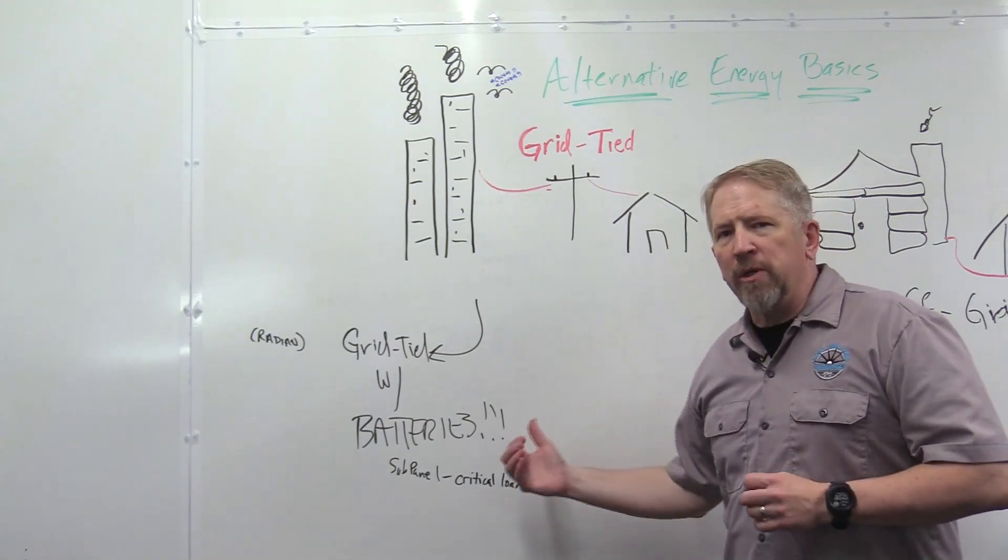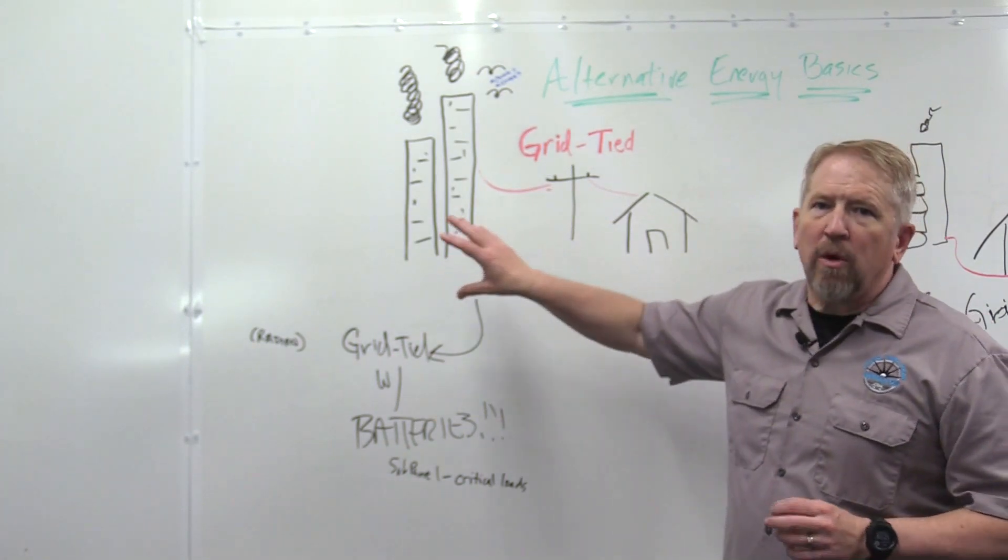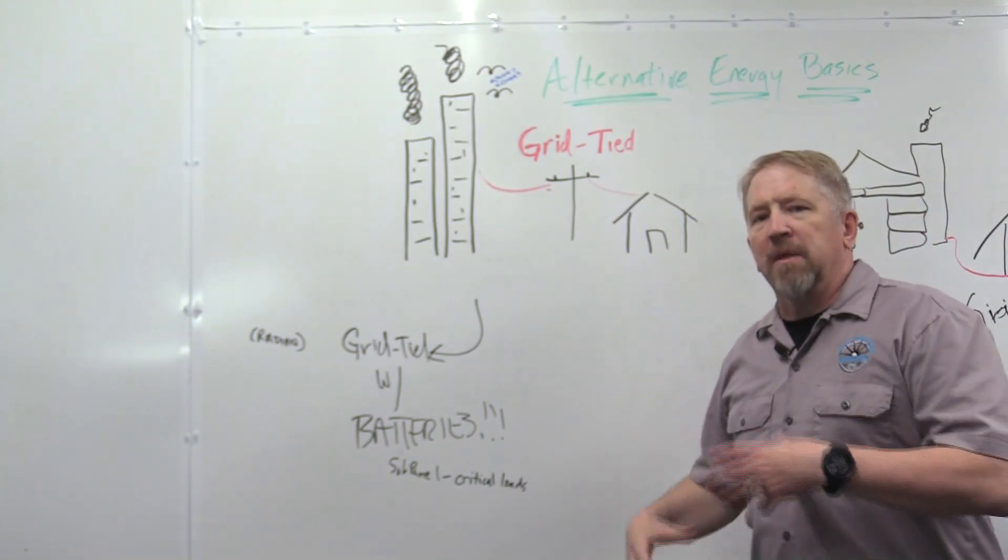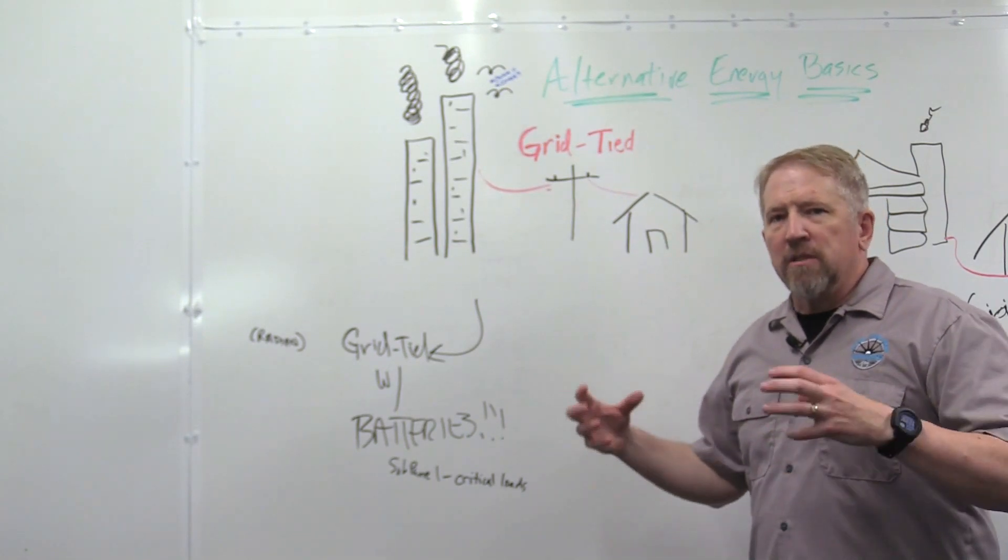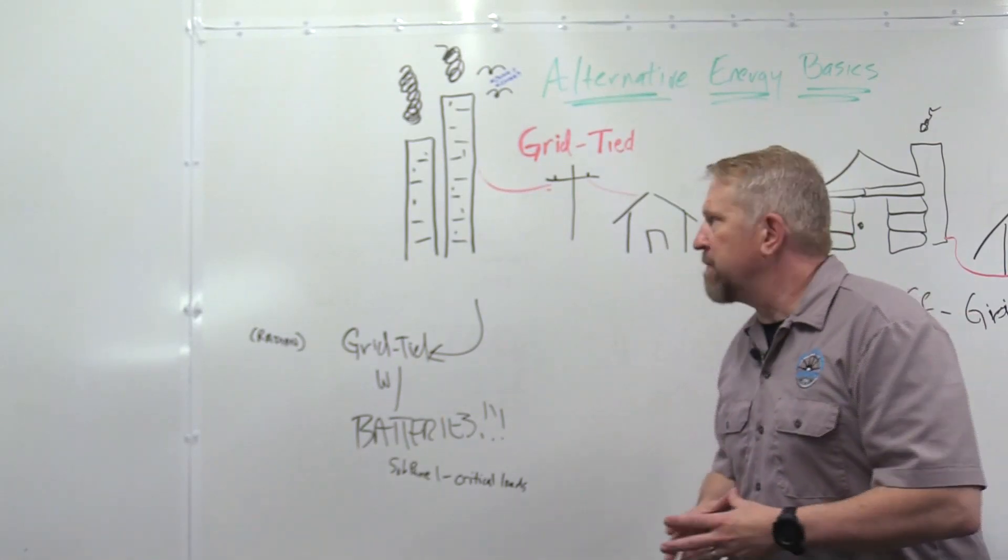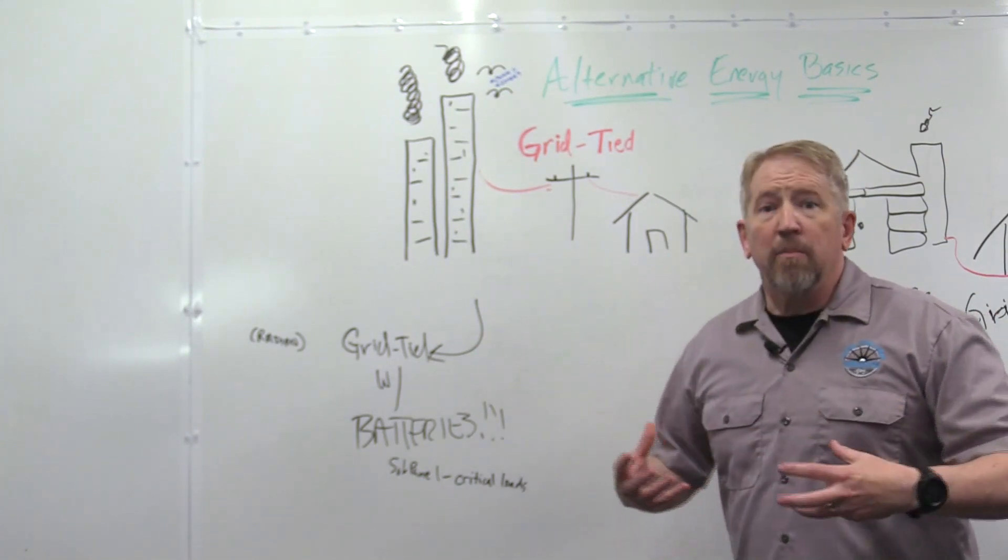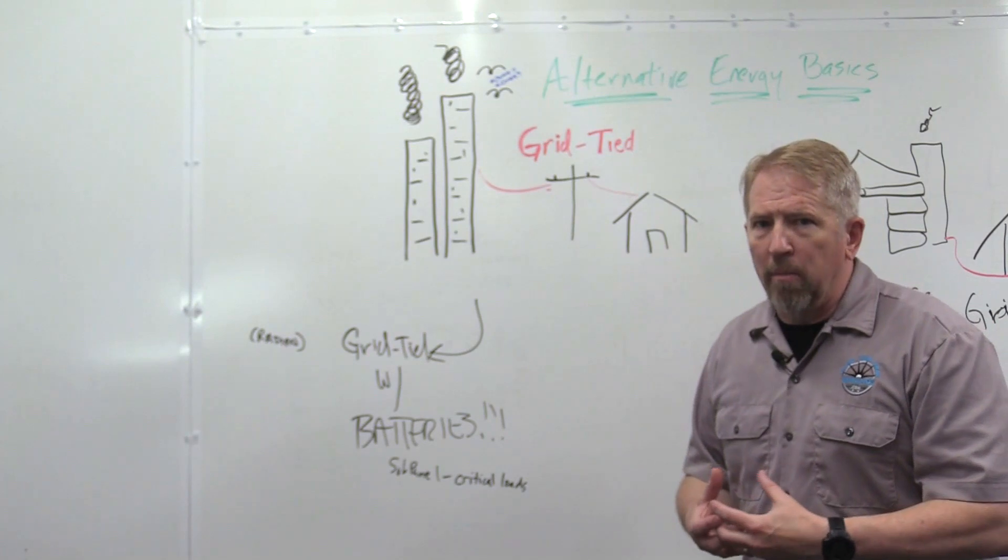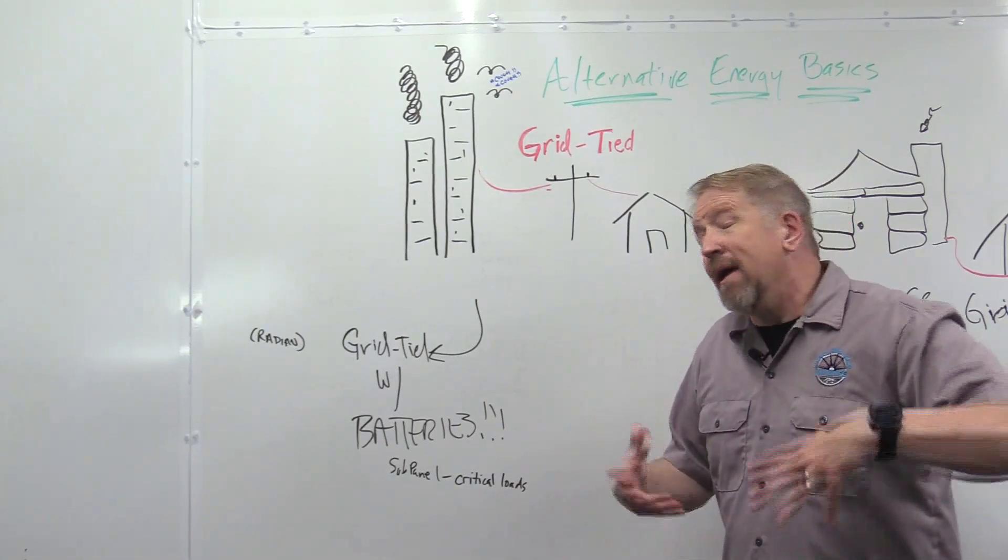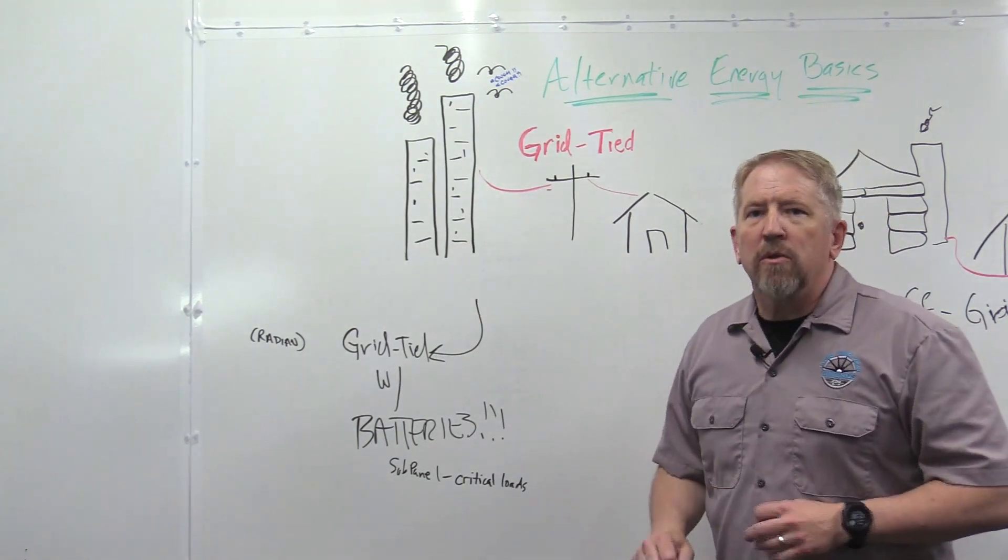So our second method we're going to look at is grid-tied and a sub-component of that which is grid-tied with batteries. So in our grid-tied scenario, you are kind of taking the grid, pulling in from your alternative energy source, whether that be wind or solar, and basically you're just netting out your energy usage. That's typically what we see in a lot of big housing developments. And what's happening is you're generating power. It is being consumed typically in your home. If there's any leftover, it's being netted back into the grid. Probably goes into your neighbor's house. The big thing here is, is if the grid goes down, you go down.